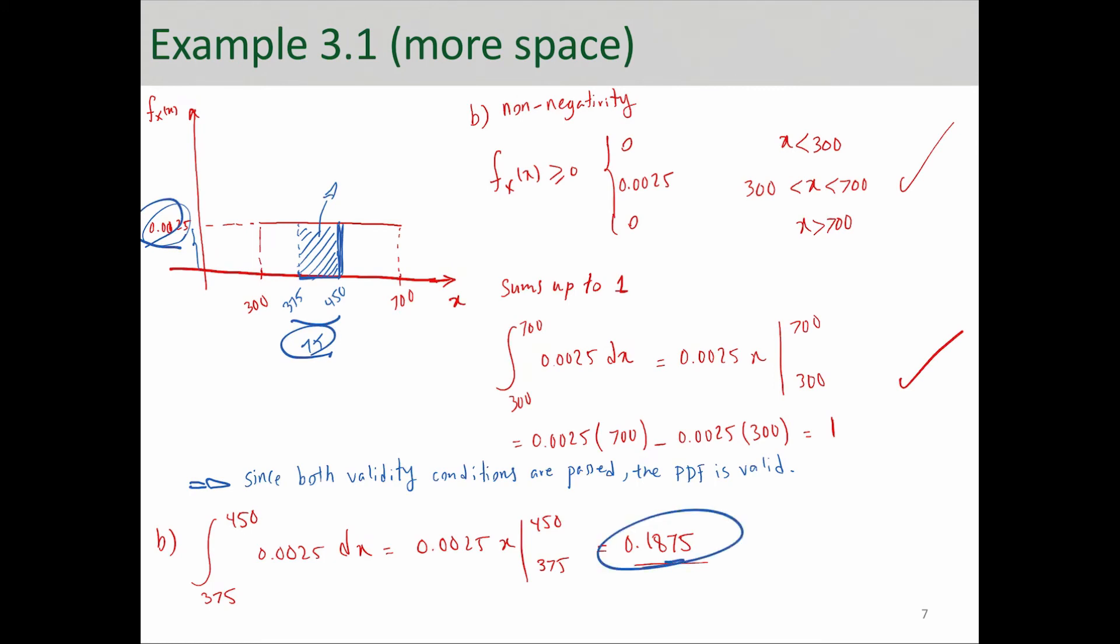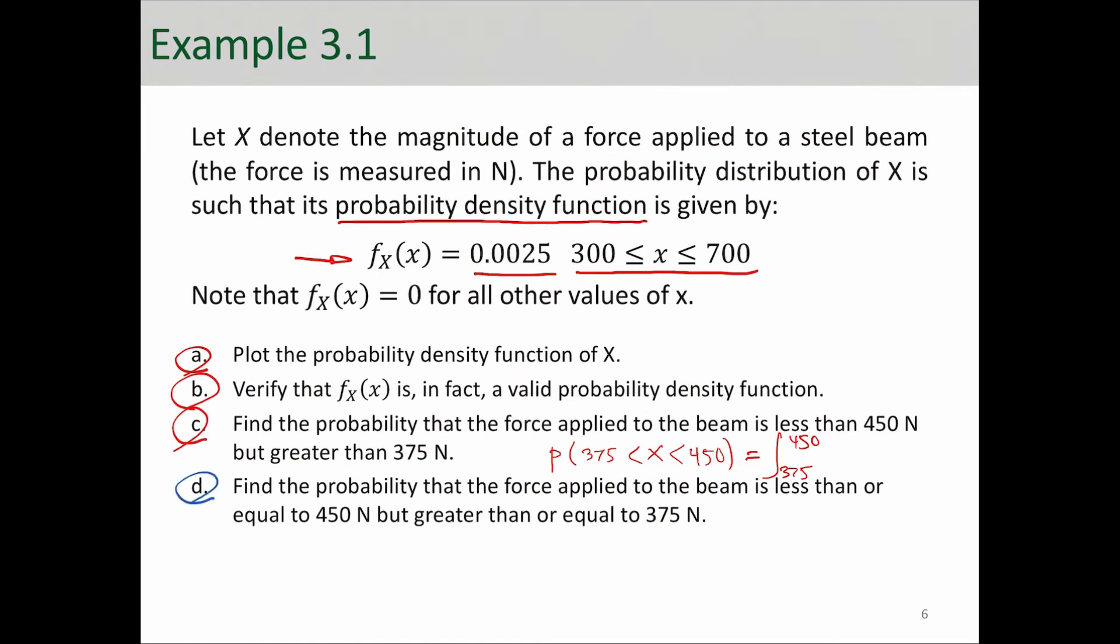So, 75 times 0.0025 will give you the same probability. So, if the function is too simple and you can solve it geometrically, go ahead and do that. Now, part D of this problem says,